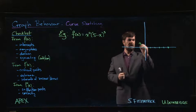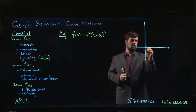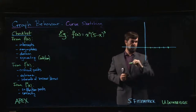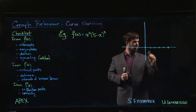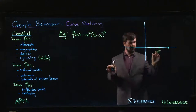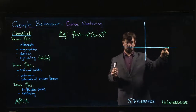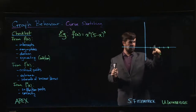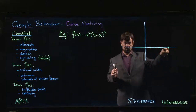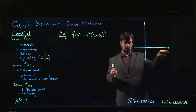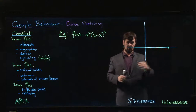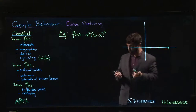We know the graph has a minimum at zero and it's going to cross the x-axis at five. What we don't yet know is what it looks like when it crosses at that point — there's something a little interesting that goes on there, and we're going to need to take some derivatives to find out.